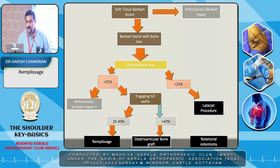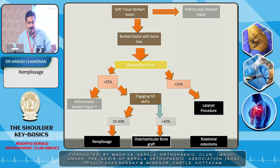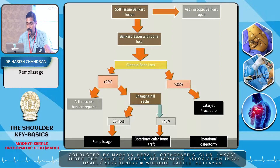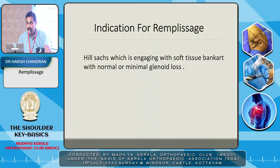The basic algorithm: if you have a soft tissue Bankart lesion, you do an arthroscopic Bankart repair. If you have a Bankart lesion with bone loss, you assess the glenoid bone loss. If it's less than 25%, arthroscopic Bankart repair plus or minus Remplissage if it's engaging. If glenoid bone loss is more than 25%, you do a Latarjet procedure. For engaging Hill-Sachs, 20–40% warrants Remplissage; more than 40% usually requires osteoarticular bone graft or rotational osteotomies.